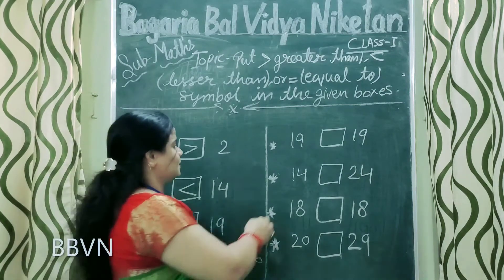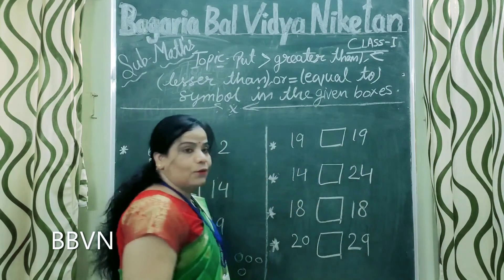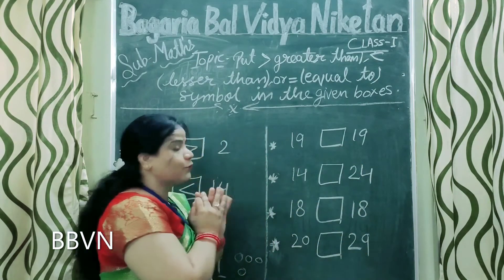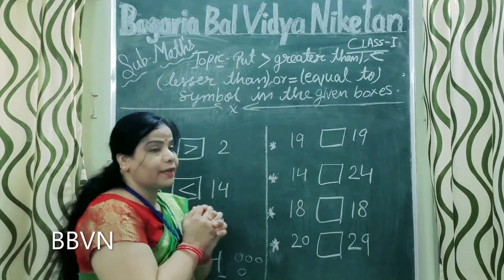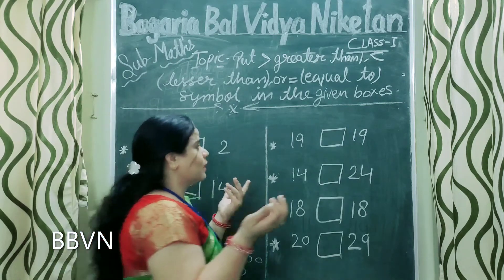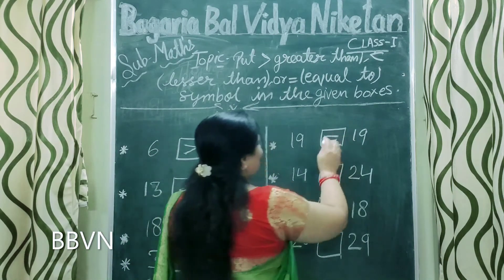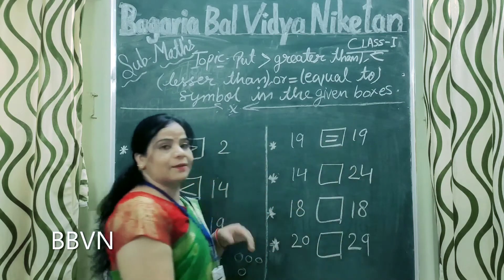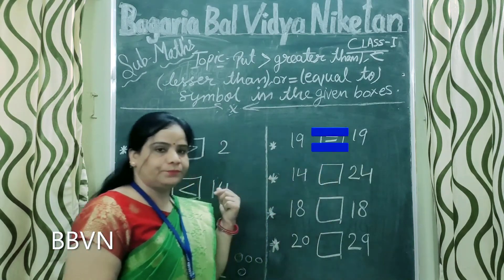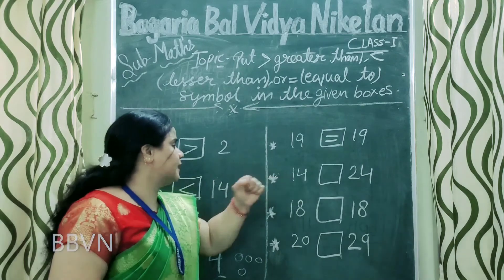And now, next. Ab, here are 19 and here are 19. Oray, ab to alligator confused ho gaya! Konsa number khaega wo? Tied ho gaya na? To isliye ham yahaan isko equal kar denge, because 19 is equal to 19.